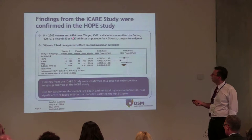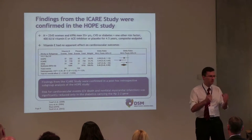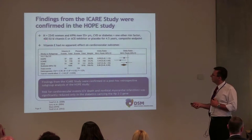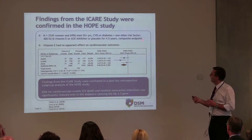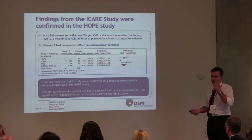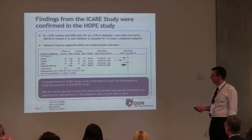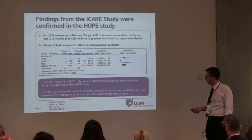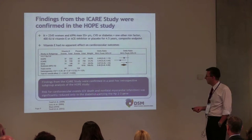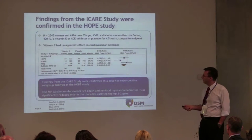The next study, the so-called HOPE study, was performed in almost 10,000 people with cardiovascular disease and diabetes and other risk factors, but not exclusively with the HP2-2 genotype. They administered 400 international units of vitamin E and an ACE inhibitor or placebo for four and a half years, with a similar composite endpoint. The study had no apparent effect on cardiovascular outcome overall. However, a post-hoc subgroup analysis confirmed that the risk for cardiovascular events — including death and non-fatal myocardial infarction — was significantly reduced only in diabetics carrying the harmful HP2-2 gene. These results were also confirmed by the Women's Health Study.